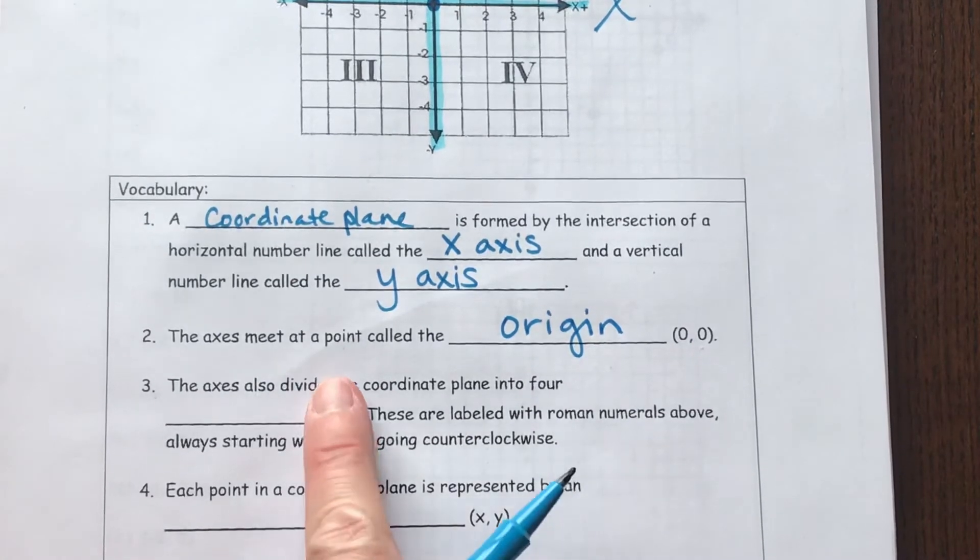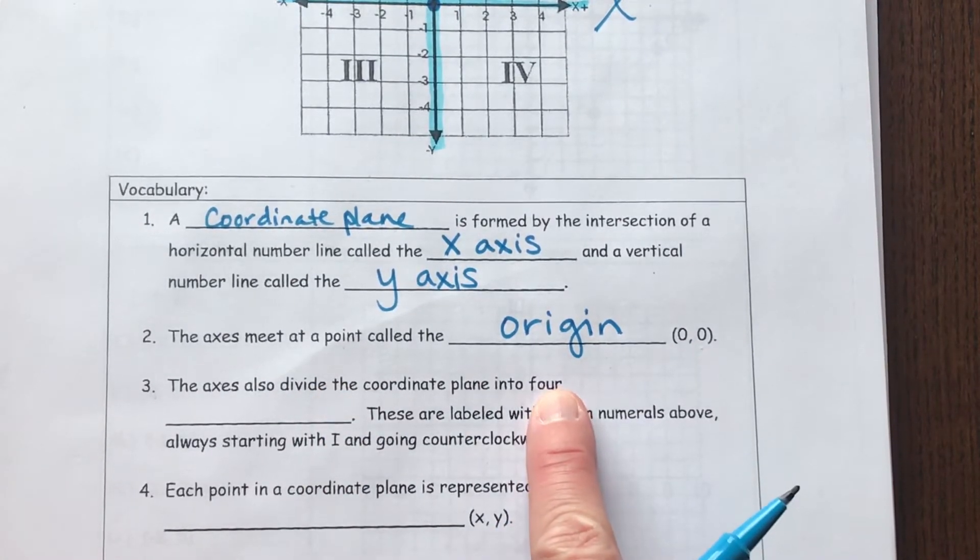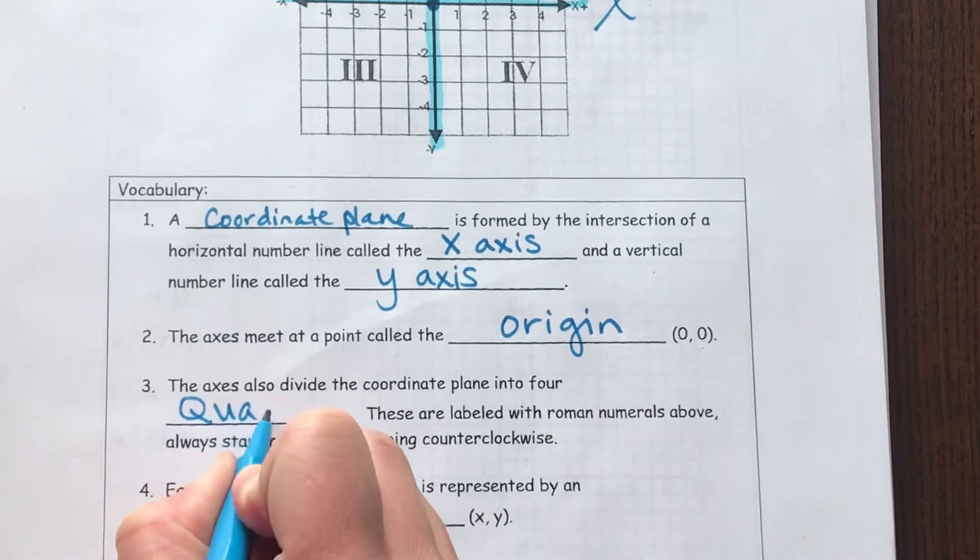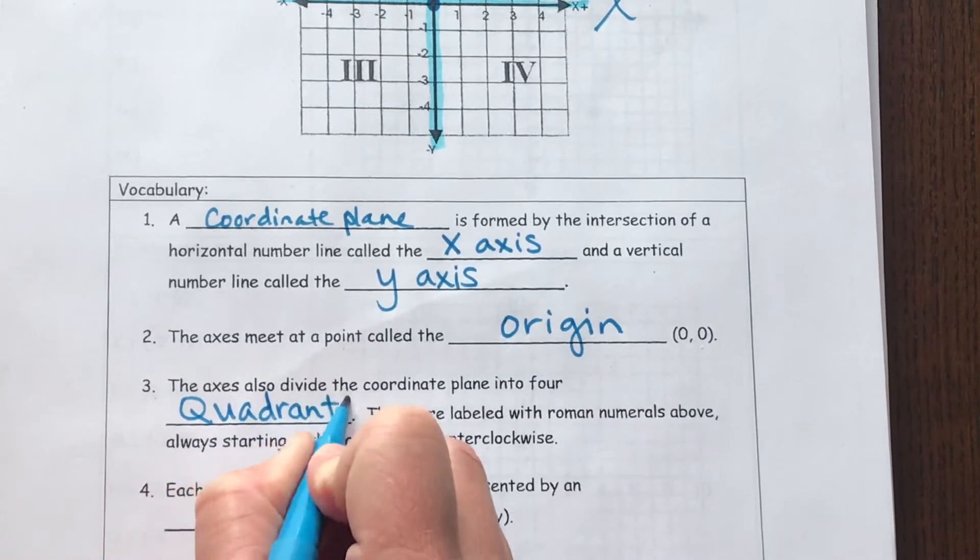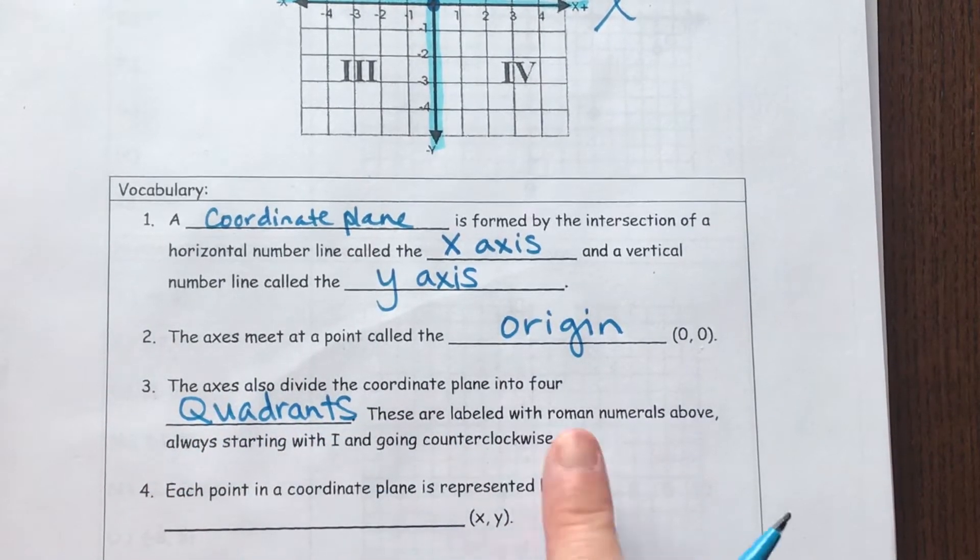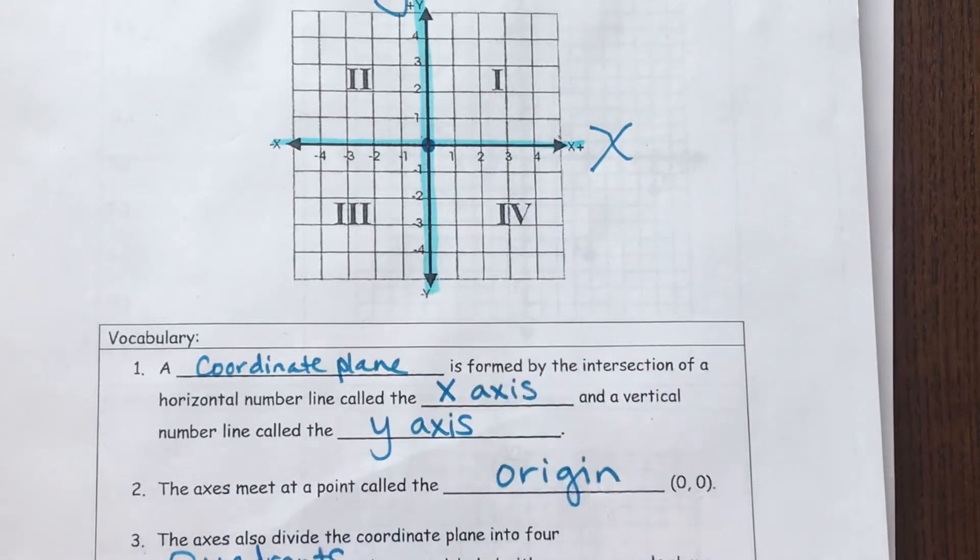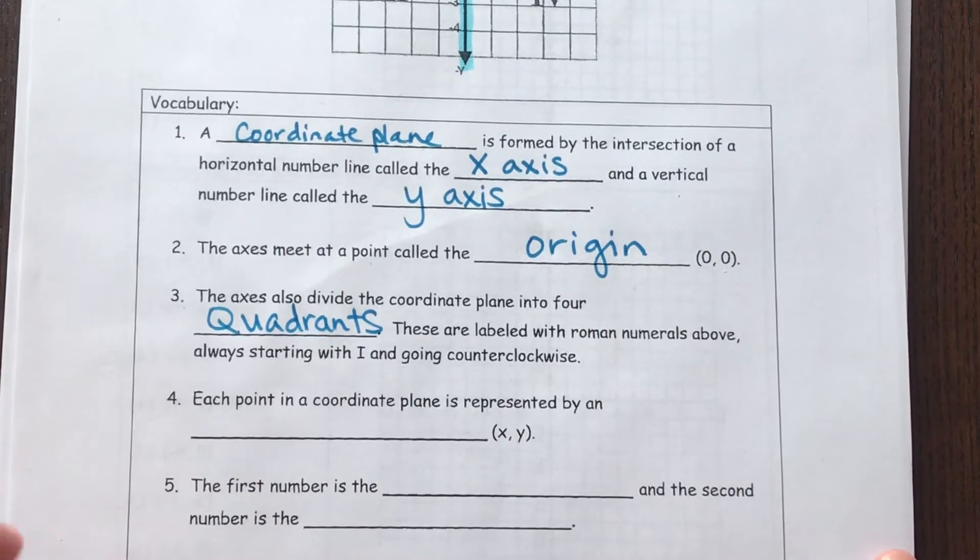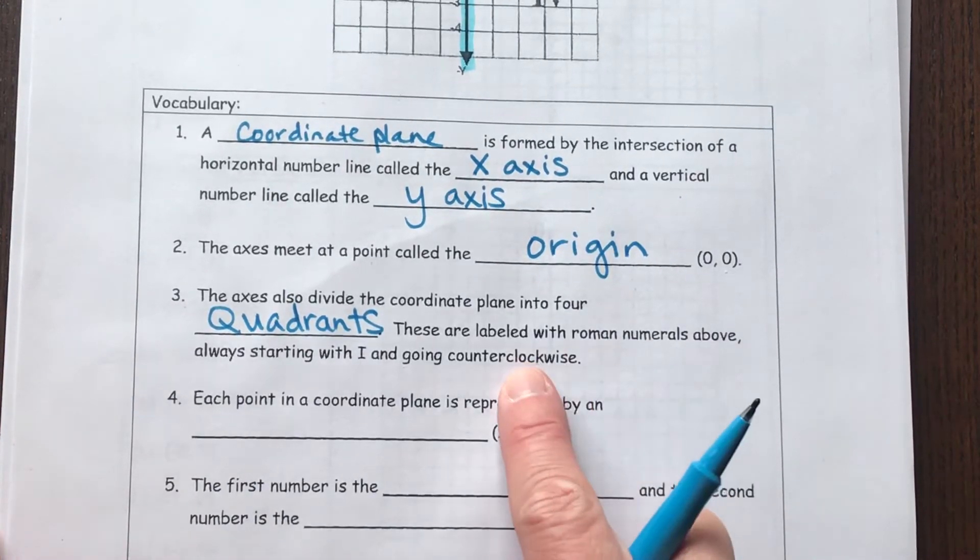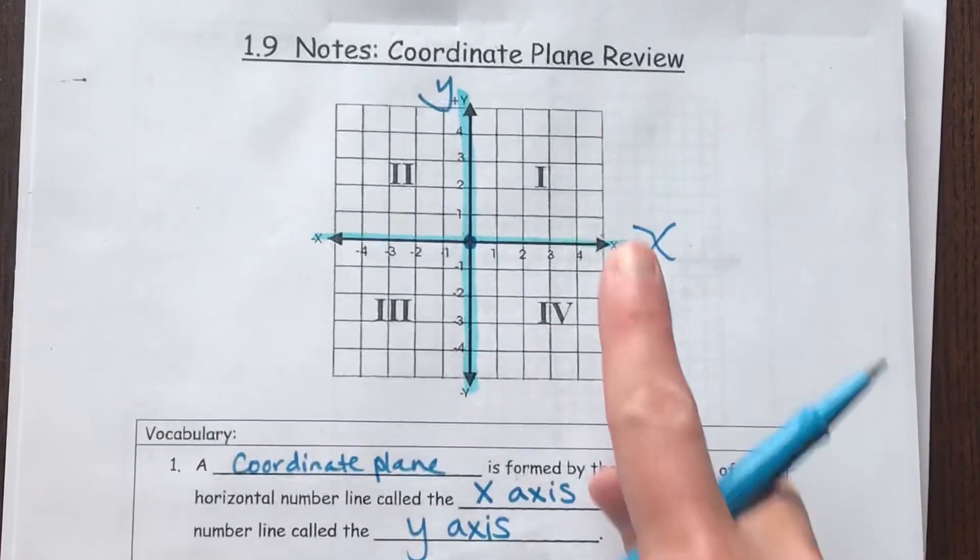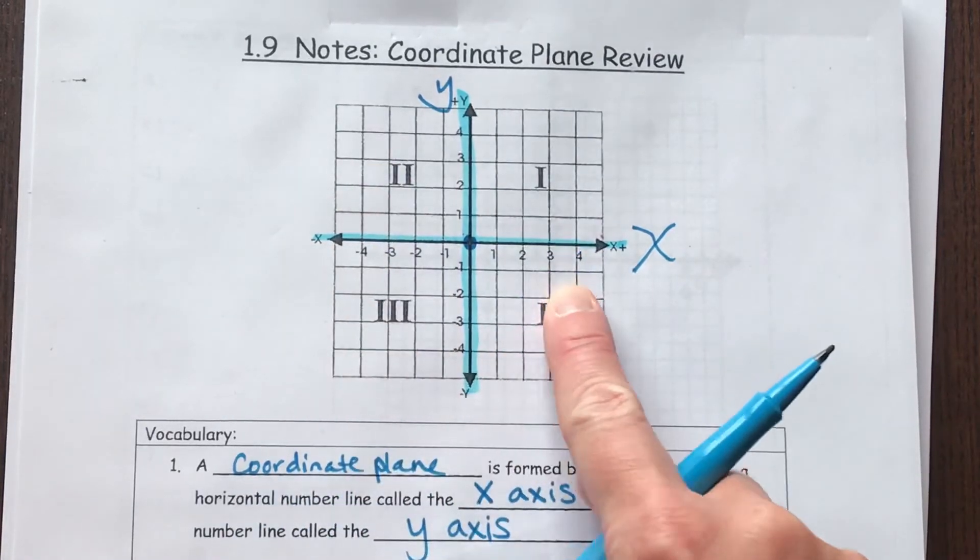The axes also divide the coordinate plane into four quadrants. These are labeled with Roman numerals above. So I showed you that one, two, three, and four. And they always start with one and they go counterclockwise. So notice how in the top right we went kind of backwards as the clock.